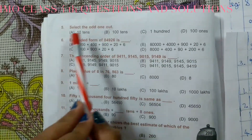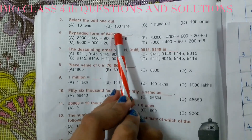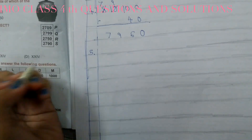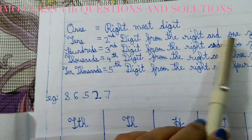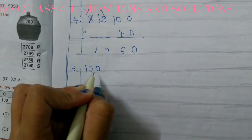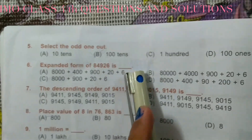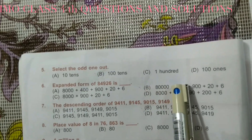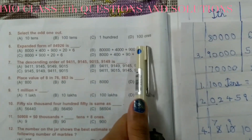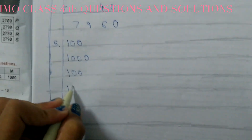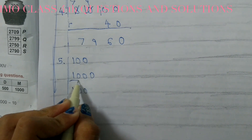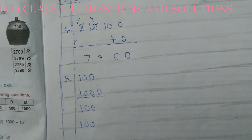The fifth question: select the odd one out. A is ten tens, B is hundred tens, C is one hundred, and D is one hundred one. Ten tens equals 100. Hundred tens: we add one zero to 100, giving 1000. C is one hundred, which is 100. D is one hundred one, which is 101. B equals 1000 while the others are around 100, so B is the odd one out. The answer is B, hundred tens.